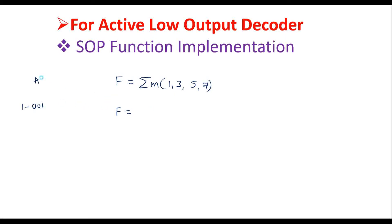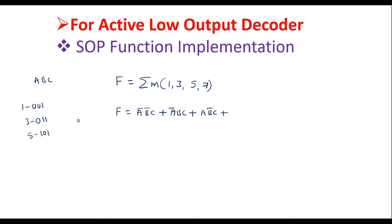Let me consider the variables a, b, c. Min term 1 is 001, which is represented as ā·b̄·c. Min term 3 is 011, represented as ā·b·c. Min term 5 is 101, represented as a·b̄·c. Min term 7 is 111, represented as a·b·c. Let me implement this SOP function using an active low output decoder.